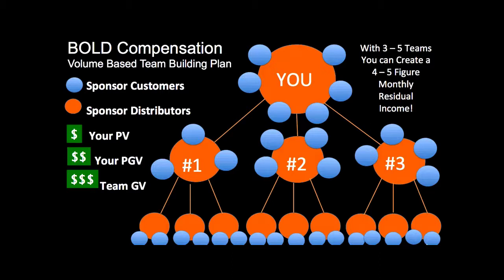Then we start to build a business — building teams and helping them build volume. What is volume? Whenever you order our products, there's volume. The Zalo 3D Mini Pack has 100 points in volume. It's a worldwide compensation plan — people in Mexico pay around 1,800 pesos, and it's $120 in the US, but no matter where in the world the product is purchased or how much they paid, it has 100 points.